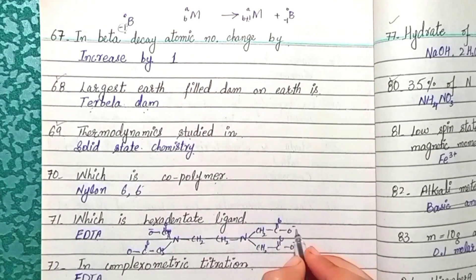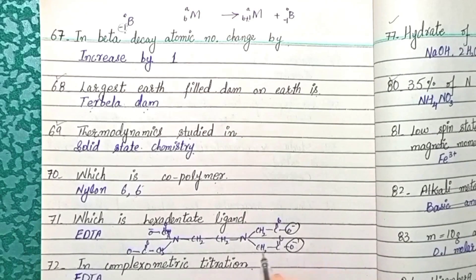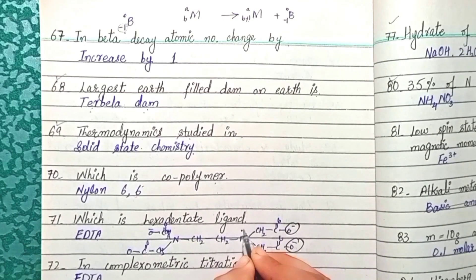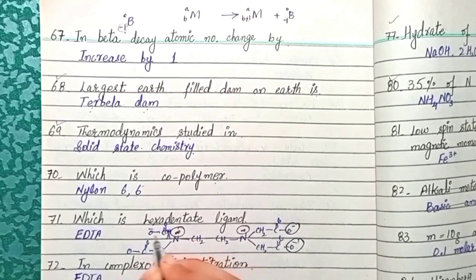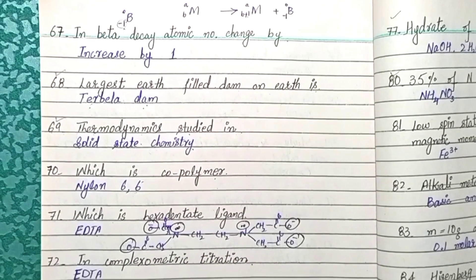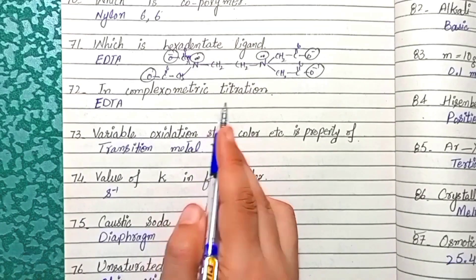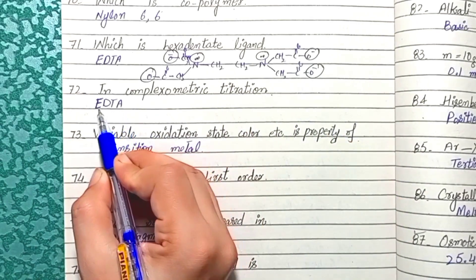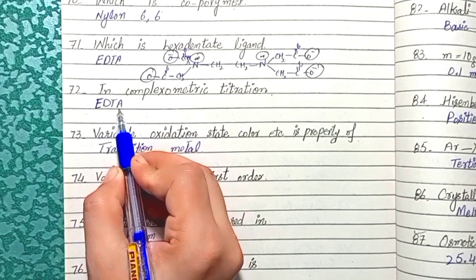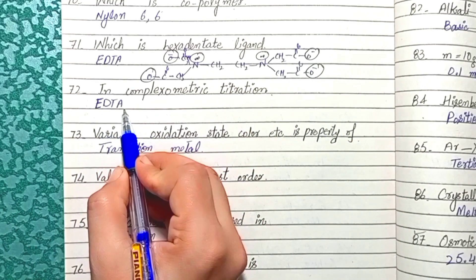EDTA donates electrons from two carboxylate oxygens, two other oxygens, and two nitrogen atoms (which also have lone pairs), giving a total of 6 donation sites. Question 72: In complexometric titration, ethylenediaminetetraacetic acid (EDTA) is mostly used.